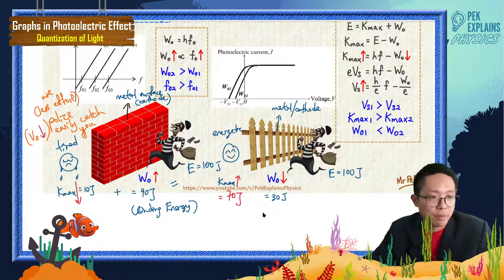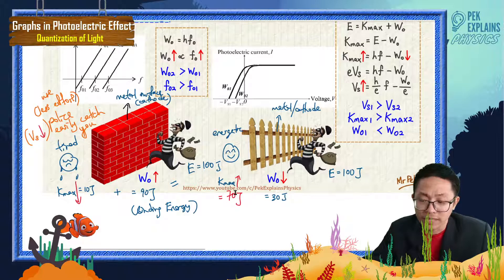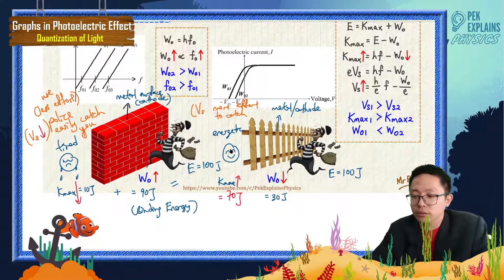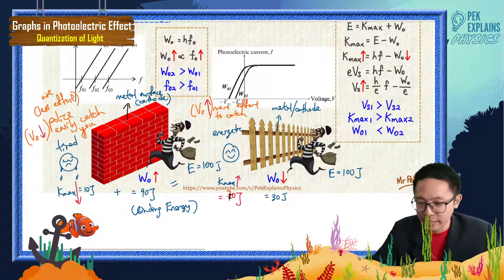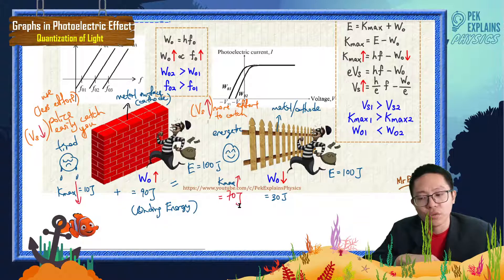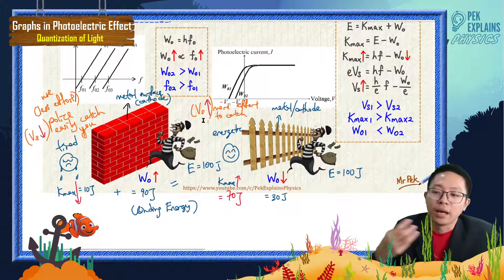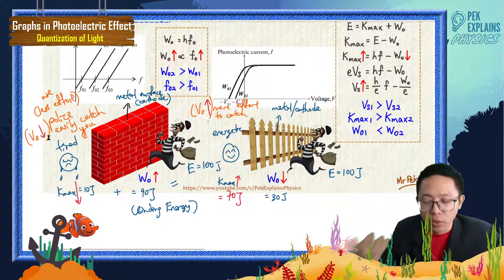Because the person escaped, he's very happy and energetic with 70 joules. Is it easy to catch this person? No — you need more effort to catch him. More effort to catch means you need a higher stopping potential, because he has high kinetic energy. So: low work function leads to high stopping potential, and high work function leads to low stopping potential.